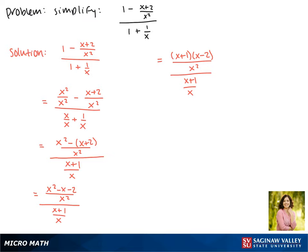Now we have a fraction divided by a fraction, and we're going to multiply by the reciprocal. Our first term is going to stay the same, so we get x plus 1 times x minus 2 over x squared times the reciprocal of our denominator, which is x over x plus 1.